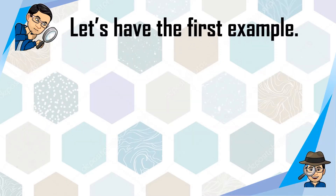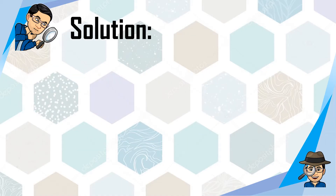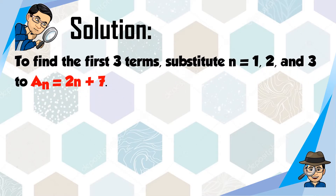Let's have the first example. Find the first three terms of the sequence whose n-th term is given by a sub n is equal to 2n plus 7. In order to find the first three terms, we have to substitute n is equal to 1, 2, and 3 into a sub n equals 2n plus 7.